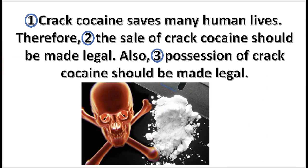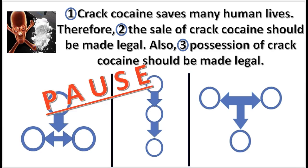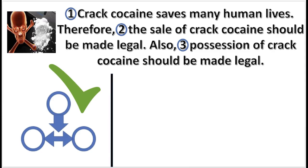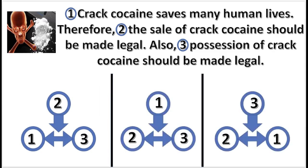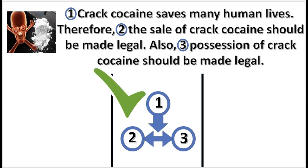Here is another practice problem. Begin by choosing the correct pattern for this argument. Press pause. That is correct — this argument has a multiple conclusion. Now choose the correct sequence of numbers in the argument. Press pause. That is correct: 2 and 3 form a multiple conclusion supported by 1.